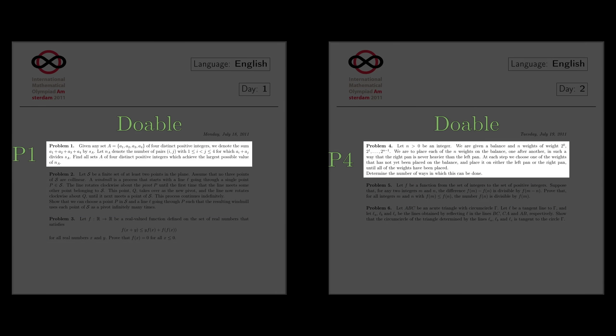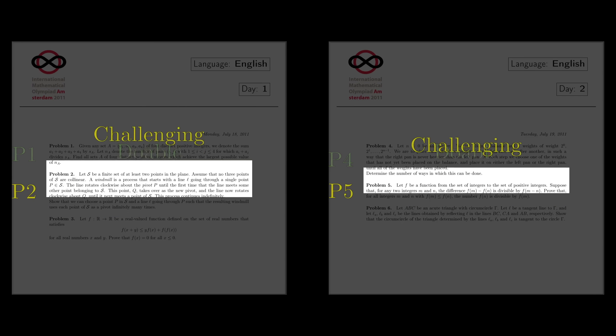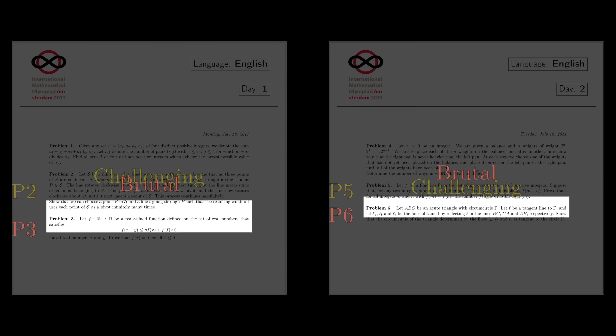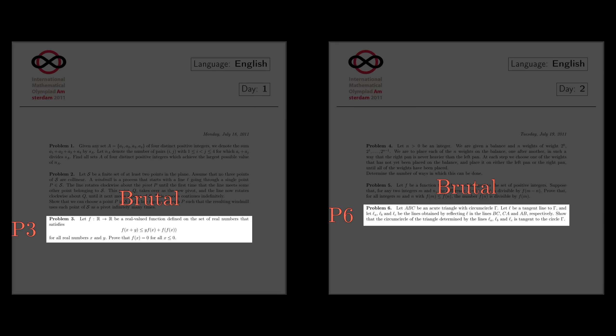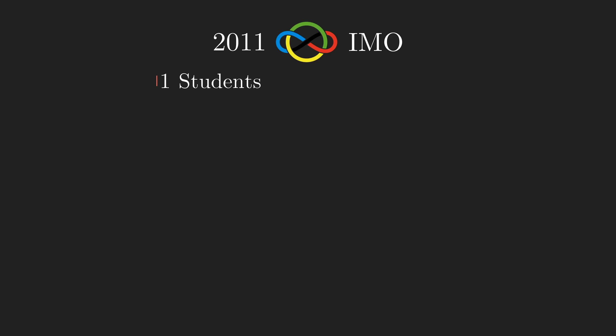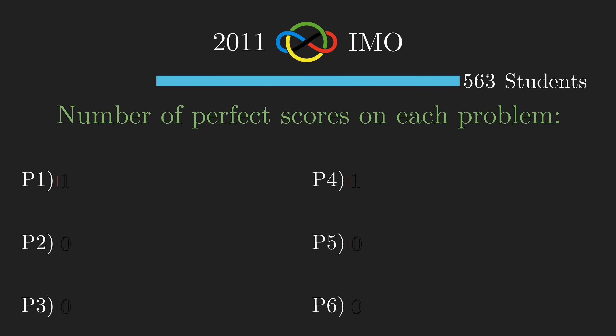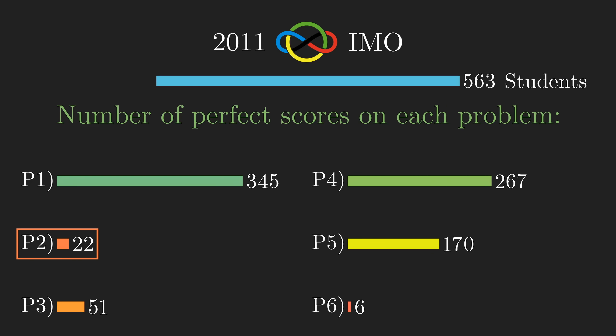But problems one and four, they should be doable. Problems two and five, they're challenging. And problems three and six, well, they can be brutal. But take a look at how many of our 563 participants that year got perfect scores on each of the problems. Only 22 of them got full marks for question number two. By contrast, 170 got a perfect score on problem five, which is supposed to be about the same difficulty, and more than twice as many got a perfect score for problem three, which is supposed to be harder.